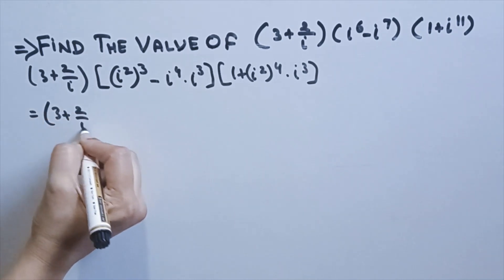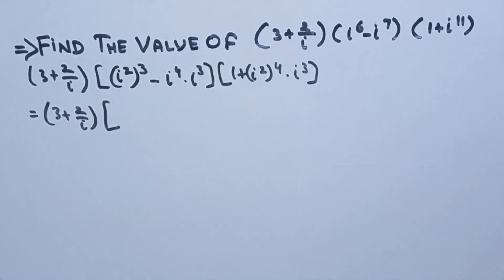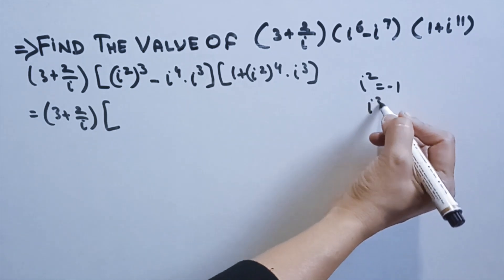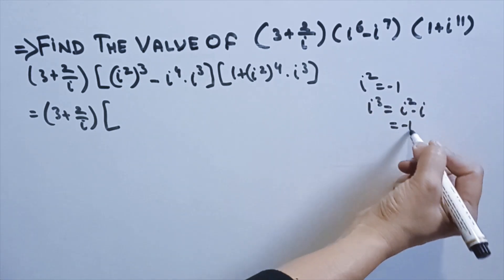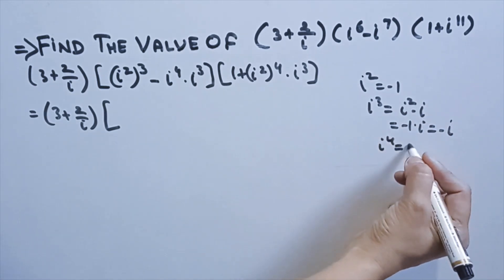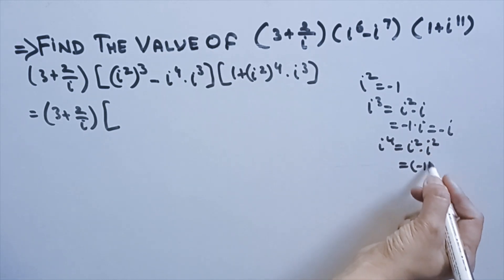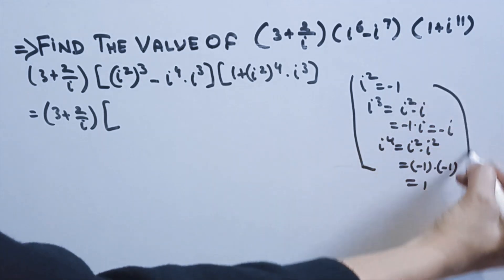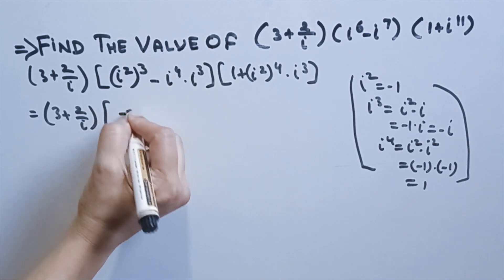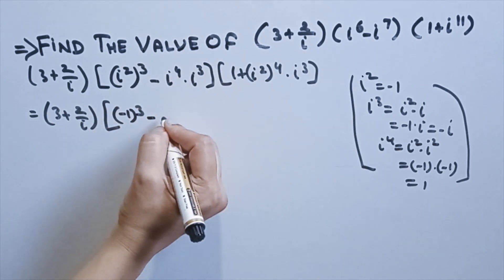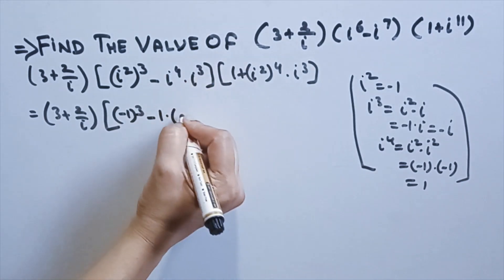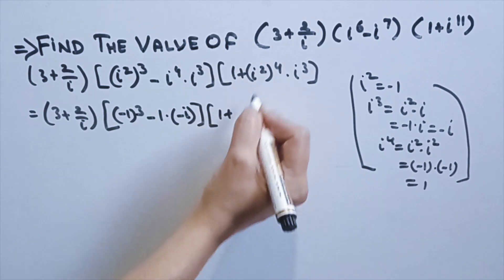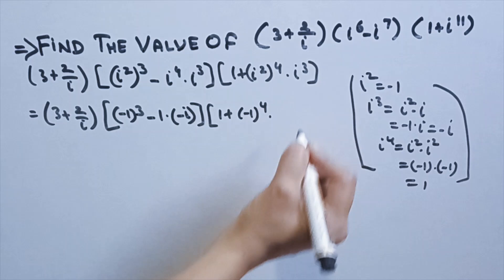We know i⁴ = 1 and i³ = i² × i = -1 × i = -i. Substituting: (i²)³ = (-1)³ = -1. Then i⁴ × i³ = 1 × (-i) = -i. So the bracket (i⁶ - i⁷) becomes (-1 - (-i)) = -1 + i. And for (1 + i¹¹): i¹¹ = (-1)⁴ × (-i) = 1 × (-i) = -i, so this bracket is (1 + (-i)) = 1 - i.